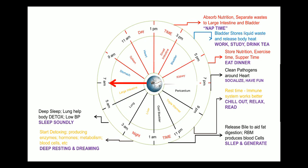Between 5 am to 7 am is the period of the large intestine, which is one of the most important organs of the GIT. It is involved in the removal of waste material from the body, absorption of water, some nutrients, and elimination of solid waste material. During this time, you should wake up and drink water — at least 2 to 4 glasses, preferably light warm water. Light warm water can enhance GIT motility and is helpful for the removal of waste material from the GIT.